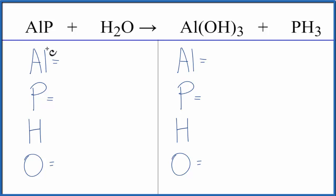Let's count the atoms up. We have 1 aluminum, 1 phosphorus, 2 hydrogens, and then 1 oxygen.